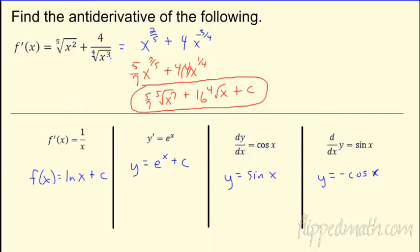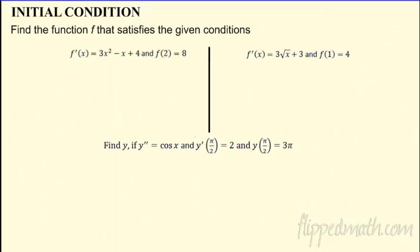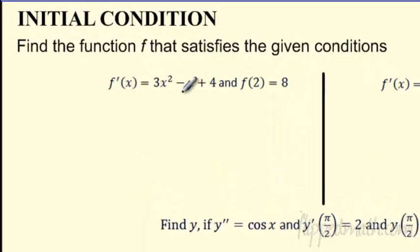These are some basic ones I want you to know. Up top, I want you to be able to rewrite these crazy root problems. And that's really basically the new stuff, except for initial condition. Sometimes we can find that c, and that's what I want to do. Sometimes we get enough information where we can actually find the entire original function. So given this, let's take a look at the first one. If I've got the f prime equals this mess, and I know the f of 2 is 8, I can actually find the original function.